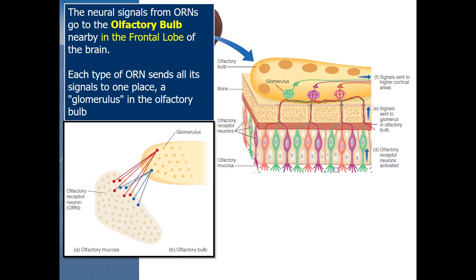Following the axons up from the ORNs, each type — each color of neuron — goes up to a little clump inside the olfactory bulb called a glomerulus (plural: glomeruli). In this picture three types are shown, but there would actually be 350 different types of glomeruli. Each type of olfactory receptor neuron ends up going to its corresponding type of glomerulus up in the olfactory bulb inside the brain.